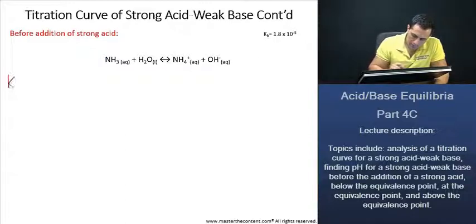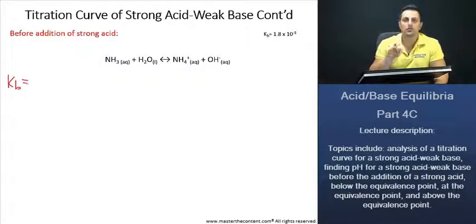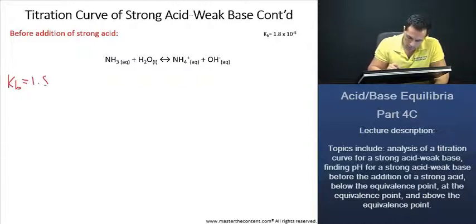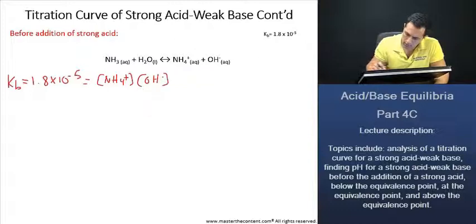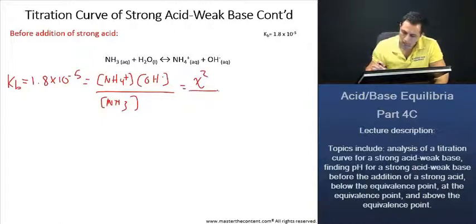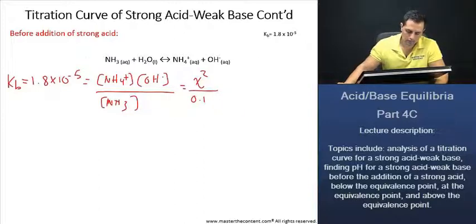We'll just go ahead and start with our base dissociation constant. This time, it's given to us. Even if it's not, we can find it in the table, and that's going to be 1.8 times 10 to the power of negative 5. I'm not going to go ahead and do the ice table, as you'll still get the gist of it from this. And then our hydroxide ion concentration over our ammonia. Now we can go ahead and just write this in as x squared. And what is our ammonia concentration? Well, they're telling us that it's going to be 0.1 molar.